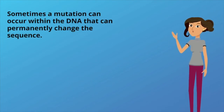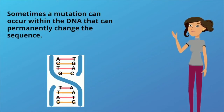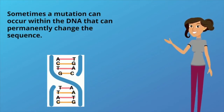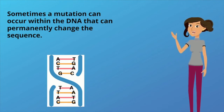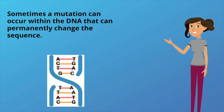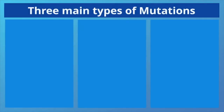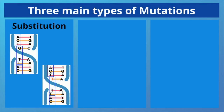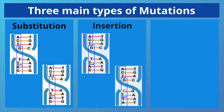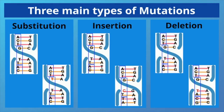Sometimes a mutation can occur within the DNA that can permanently change the sequence. There are three types of mutations: substitution, insertion, and deletion.